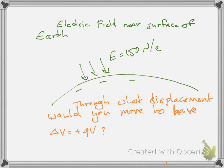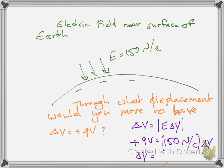This is a constant field, so the potential difference is E times delta Y. If we want delta V to equal 9 volts: 9 volts equals 150 newtons per coulomb times delta Y. Solving, delta Y equals 0.06 meters, or 6 centimeters. All the numbers are in MKS, and electric field is also volts per meter, confirming the units work out.